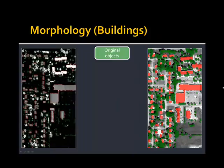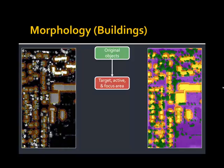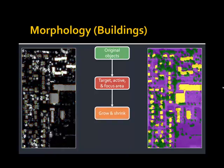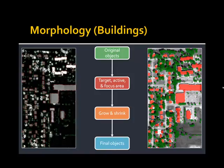Morphology was also necessary for buildings, so we applied a very similar routine with slightly adjusted parameters — not to make the round objects needed for tree canopy, but to create the straight edges one would expect to see on a building. We have the original building objects, the active class assigned to buildings, the focus area as an orange buffer to reduce memory consumption, and then we perform growing and shrinking operations to straighten out the edges. This morphology algorithm involves about 30 different processes with a lot of contextual information and can be reused for various land cover classes.